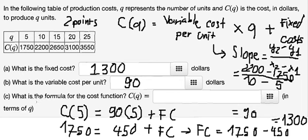And the last one, what is the formula for the cost function? We have 90, we put in here, the fixed cost we put 1300, and this is the final answer.